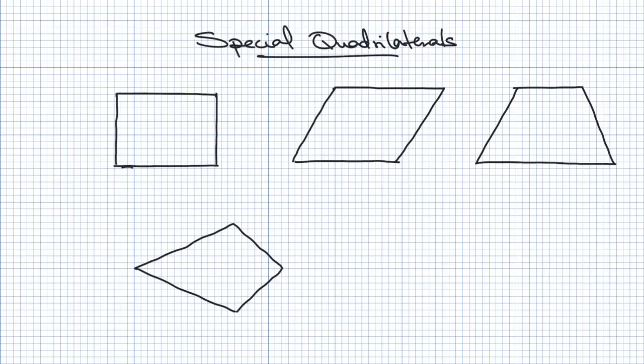In this video we'll talk about special quadrilaterals. We'll start with a rectangle. Because of the two triangle rule, in any quadrilateral you get two triangles, and each triangle has an angle sum of 180 degrees. This means that in all quadrilaterals the sum of all angles will always be 360, which is 2 times 180.